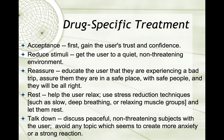The ARRRT technique: A stands for acceptance — first gain the user's trust and confidence, not the easiest thing especially with PCP and ketamine since they're paranoid. The first R is reduce stimuli — get the user to a quiet, non-threatening environment. The second R is reassure — educate the user that they are experiencing a bad trip, assure them that they are in a safe place with safe people and they will be all right. The third R is rest — help the user relax using stress reduction techniques such as slow deep breathing or relaxing muscle groups. The last is T for talk down — discuss peaceful, non-threatening subjects with the user and avoid any topic which seems to create more anxiety or a strong reaction.